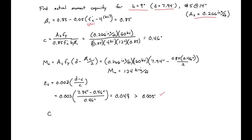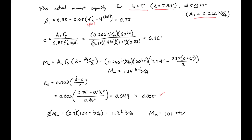We can then find our phi MN: 0.9 times 124 kip-inches per foot gives us phi MN of 112 kip-inches per foot. Comparing to our demand MU of 101 kip-inches per foot, our factored capacity is greater than our demand, so we're okay.